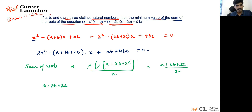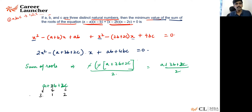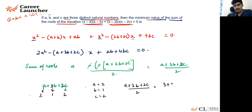To minimize a + 3b + 2c with distinct natural numbers: b has coefficient 3, so assign b = 1; c has coefficient 2, so assign c = 2; a gets coefficient 1, so assign a = 3. Then a + 3b + 2c = 3 + 3(1) + 2(2) = 3 + 3 + 4 = 10, divided by 2 gives a minimum sum of roots equal to 5.